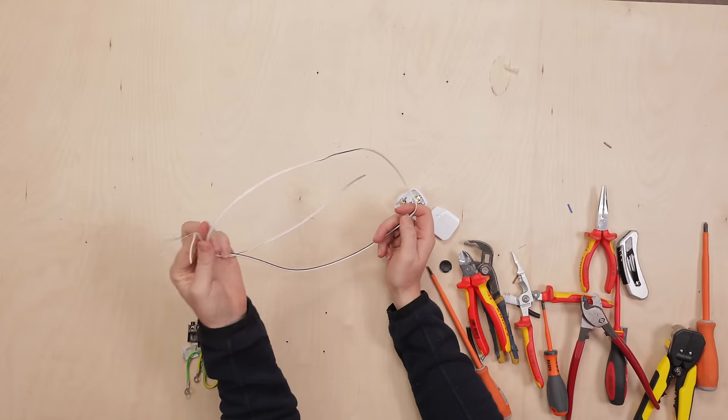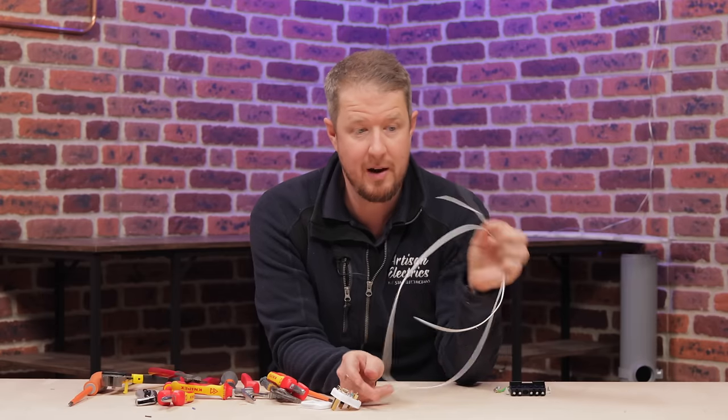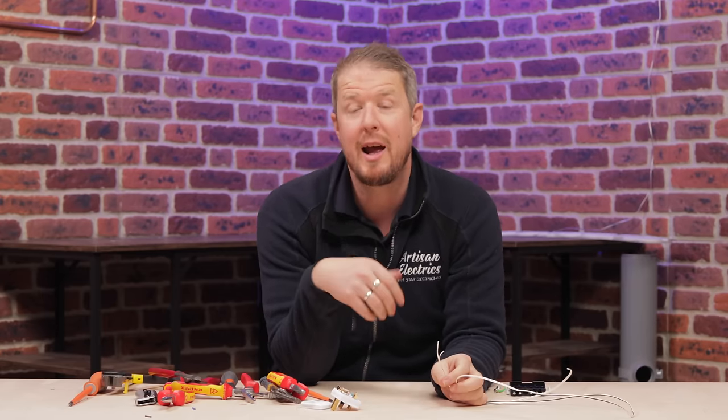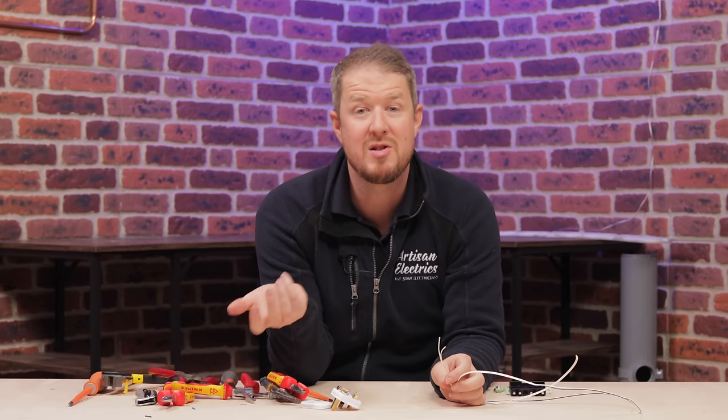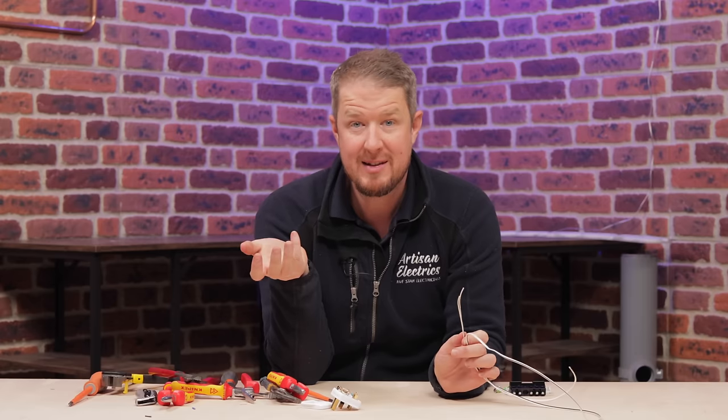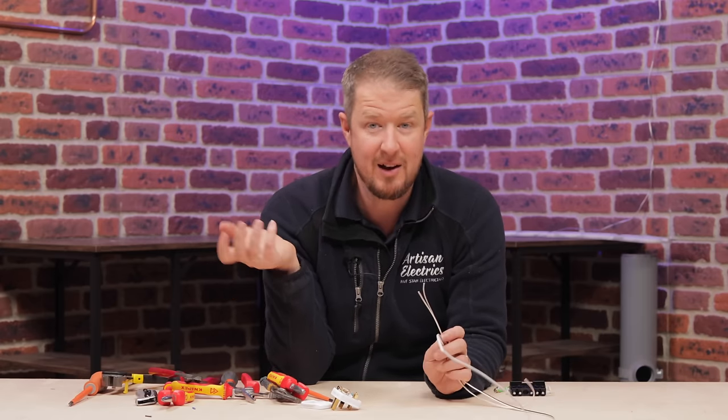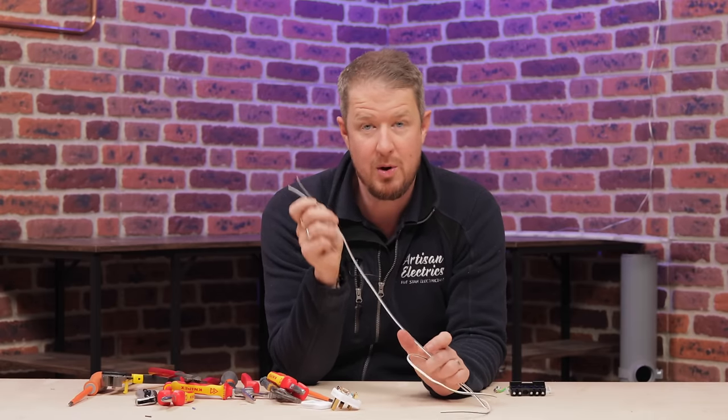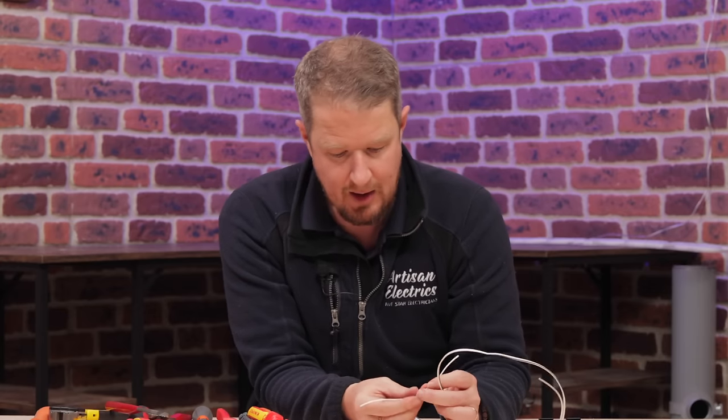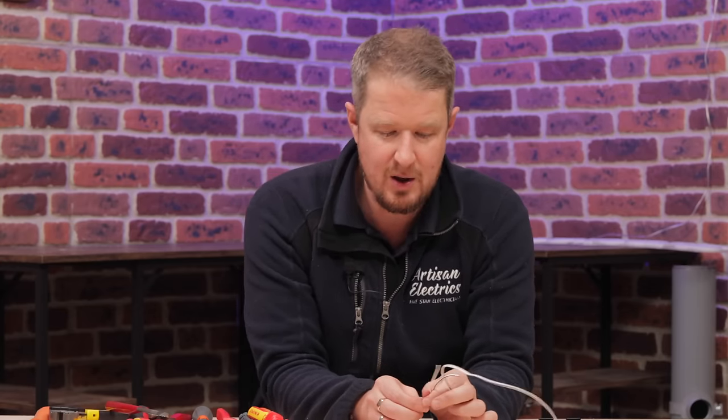Now bell wire is not the only time we see people putting the wrong size cable in. We often see people doing it with twin and earth cable. Putting in too smaller cable for a cooker circuit or a shower circuit for example. Even upgrading the shower to a more powerful one on the same size cable. We've even seen it with using flex cables to run outside sockets and things like that. There's loads of scenarios where people use the wrong size cable and it can create serious danger. So if you're not sure what size cable to use always consult an electrician.